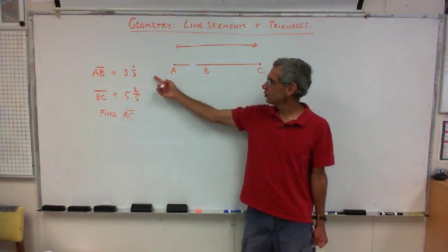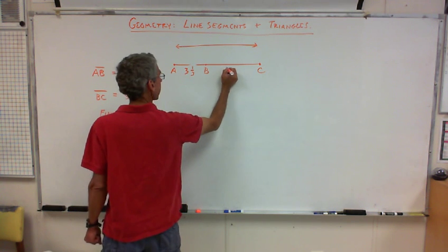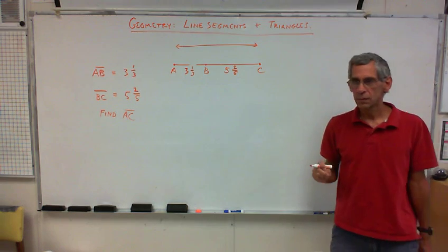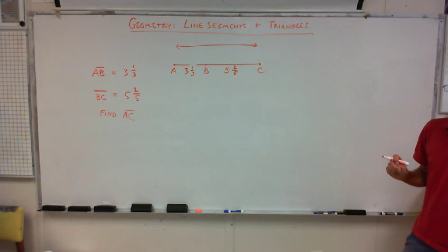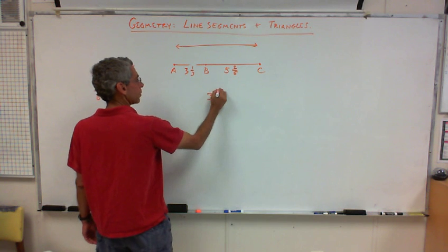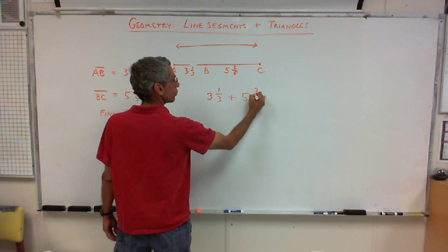So, what would I have to do? This is three and a third, and this is five and two fifths. What would I have to do? Add. What? Say it again. Add. Add, right? So, I'm going to just set it up. I'm going to go three and one third plus five and two fifths.